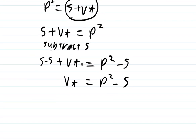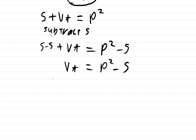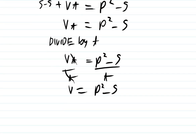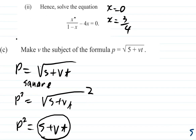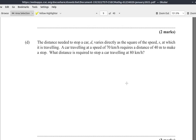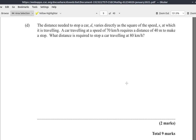VT equals P squared minus S, divided by T on both sides. T cancels T, so you have V equals P squared minus S, all over T. So V equals (P squared minus S) divided by T. That's it for that. We will leave the remaining parts for our next video.